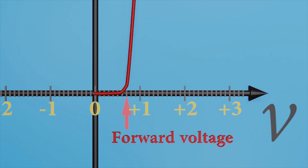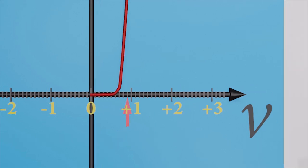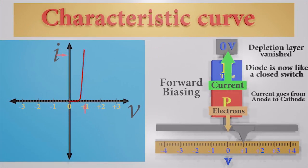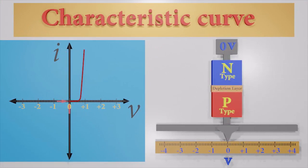Let's zoom in. The current flow started nearly at 0.7 volts. That is the forward voltage of this diode. We know increasing the voltage of the p-end makes the diode a conductor.